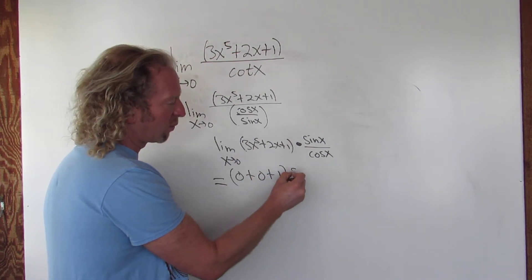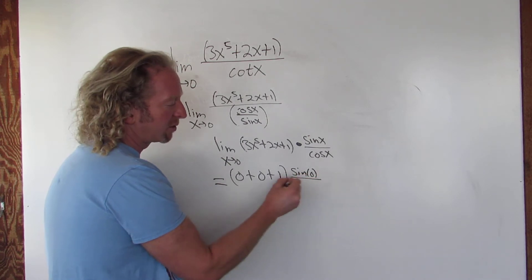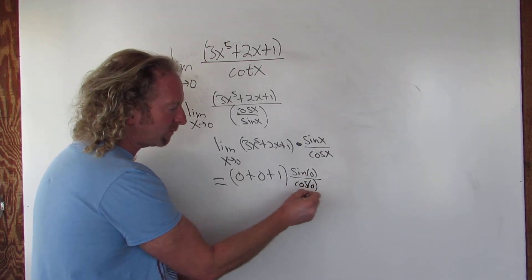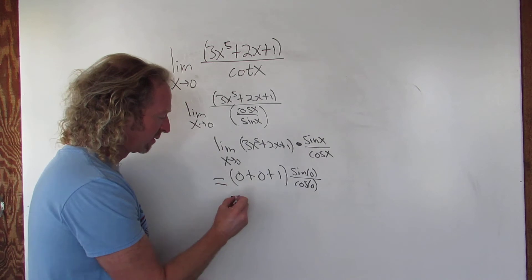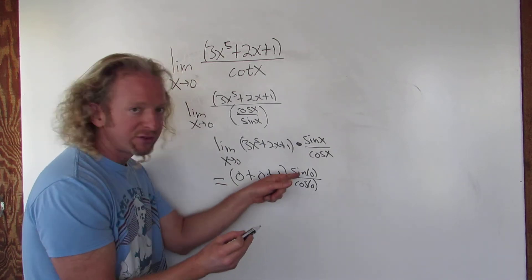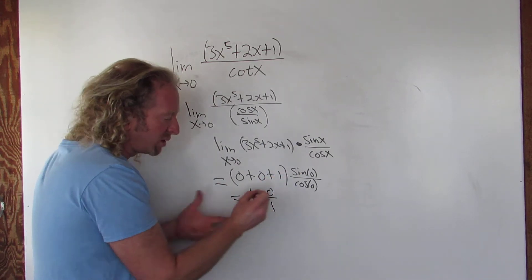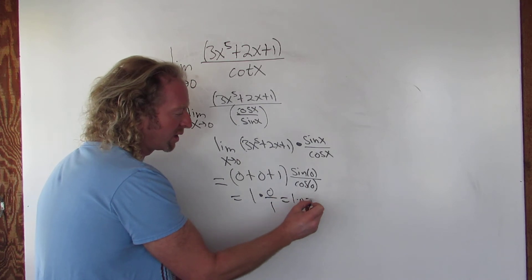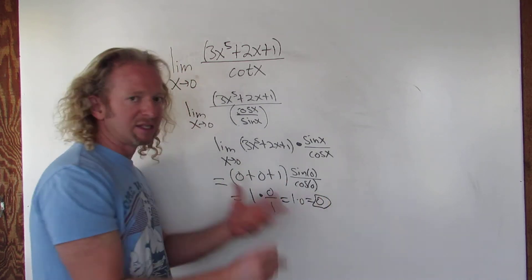Sine of 0, which is sine of 0, and then cosine of 0. This is just 1. Sine of 0 is 0. Cosine of 0 is 1. You just get 1 times 0. So the answer ends up being 0. That's it.